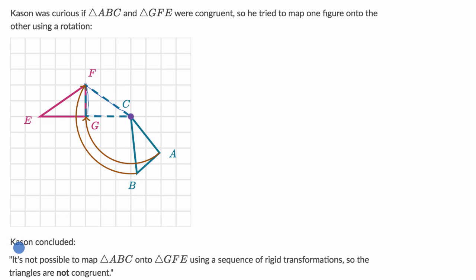And then they say Kassan concluded it is not possible to map triangle ABC onto triangle GFE using a sequence of rigid transformations. So the triangles are not congruent.